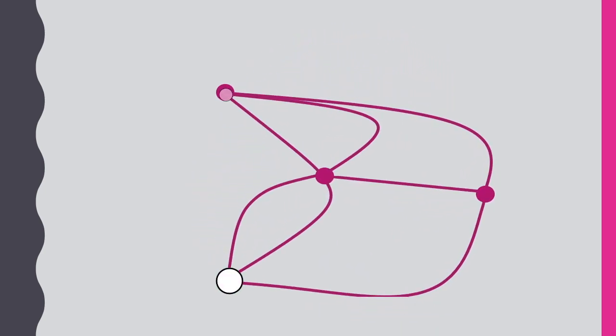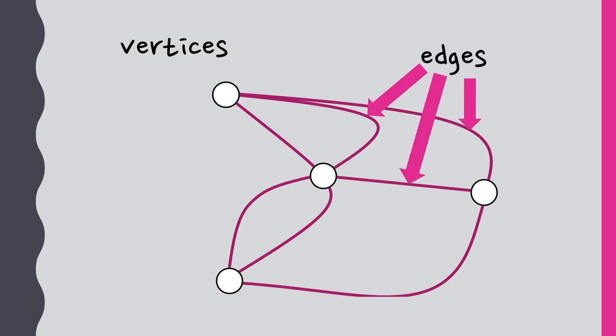So, some of the terms that we have so far are vertices, which can also be referred to as nodes, edges, which sometimes can be referred to as arcs. Then we refer to the degree of a vertex as the number of arcs going in or out. And if a node is connected to itself, this counts as two.